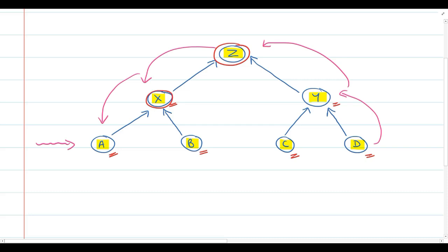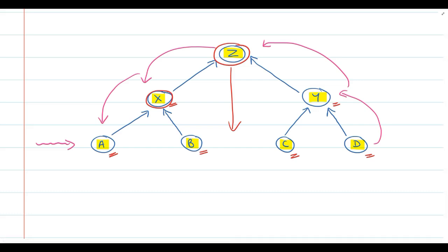So why do we follow a bottom-up approach when it comes to budget preparation, rather than having budgets prepared by top management and communicated throughout the organization? The reason is that if targets are imposed by top management, that can be very demotivating. If you want these managers to be committed to achieving the budget targets, you need to involve them in the budgeting process.